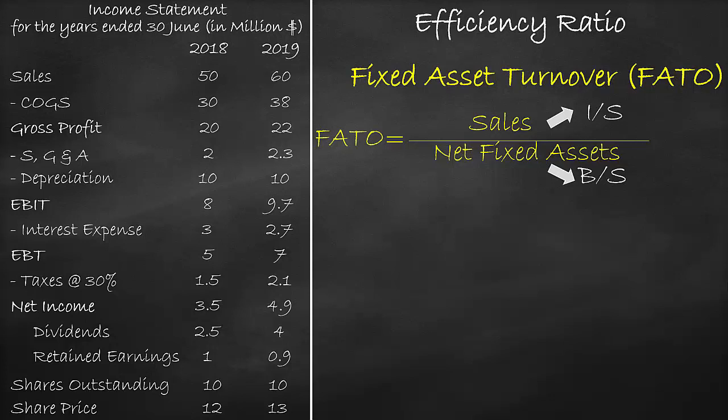Please note that the income statement is a flow account, which means that it is calculated over a year, while the balance sheet is a stock account, which is calculated on a certain day. Since we cannot compare a year to a day, we need to convert a day into a year by getting the average of the two balance sheet items. So, we will use one income statement and two balance sheet items.